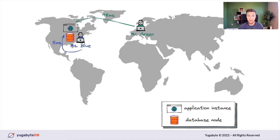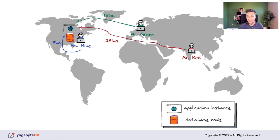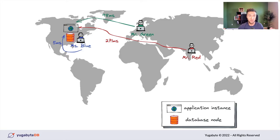However, the latency for Mr. Green, who wants to join the chat, will be much higher — around 98 milliseconds — because his requests need to travel through the Atlantic Ocean. For Mr. Red, the situation is even worse because he is located in India. When he joins the chat in our Slack-like messenger, his requests travel a much longer distance, so the average latency can be as high as 270 milliseconds.